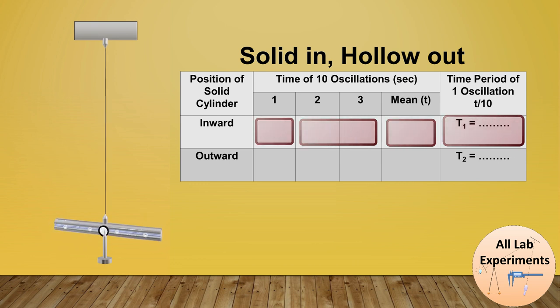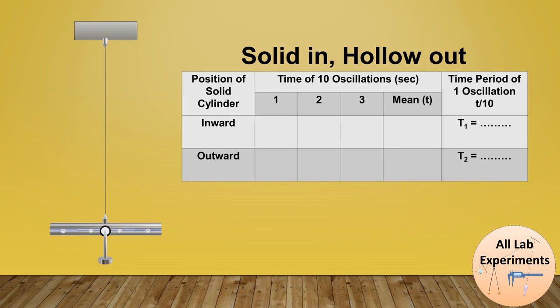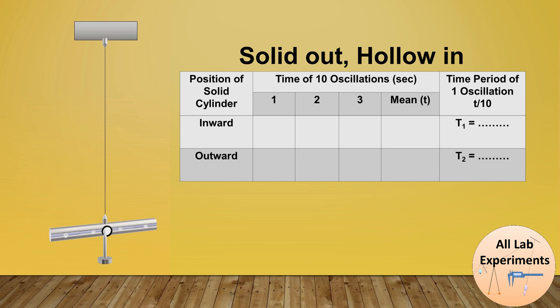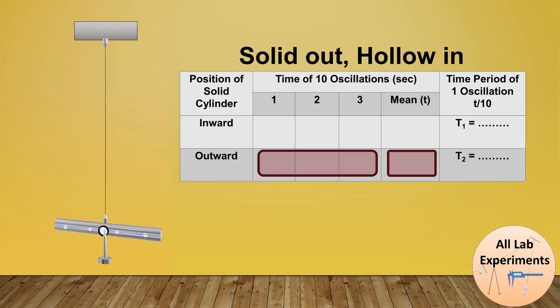Now let's change the position of hollow and solid cylinders. Now hollow cylinders are inward and solid cylinders are outward. In this position as well, we will repeat the same step and observe the time of 10 oscillations three times, take the mean, and finally get the time period of one oscillation for this arrangement, which we call T₂.